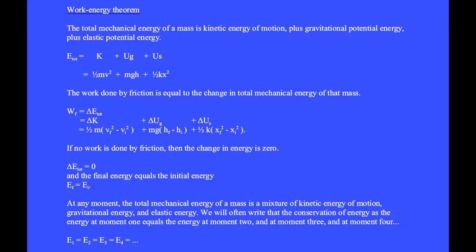Here is the work-energy theorem. The total mechanical energy of a mass is kinetic energy of motion, ½mv², plus gravitational potential energy, mgh, plus elastic potential energy, ½kx².